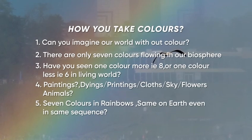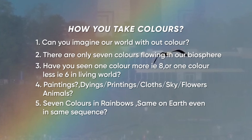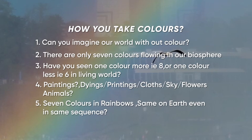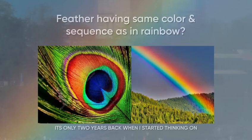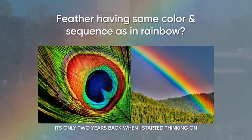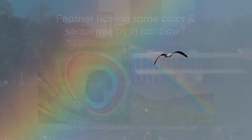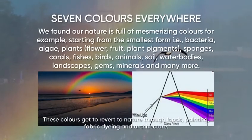How do you take colors — can you even imagine a world without them? There are only seven colors which flow in the entire biosphere. Have you noticed one color more than seven or less than that? From scholars and paintings to vibrant skies and flowers, animals everywhere — we can see seven colors on a rainbow. There are places on earth with those same seven colors in the same sequence. Look — it's a feather having the same colors and sequence as seen in a rainbow.